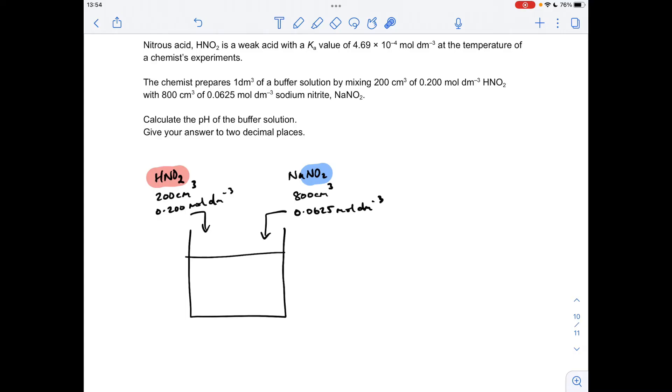So the first thing I'm going to do is work out how many moles of the nitrous acid and sodium nitrite we've actually put into this buffer solution. So just two concentration times volume calculations. Concentration of the acid, 0.2.